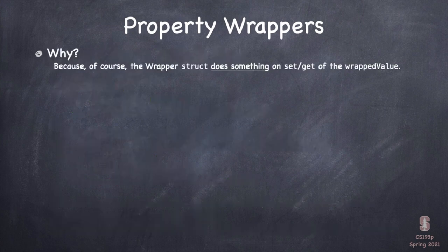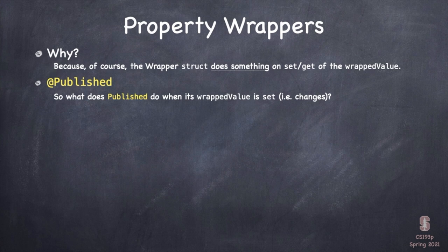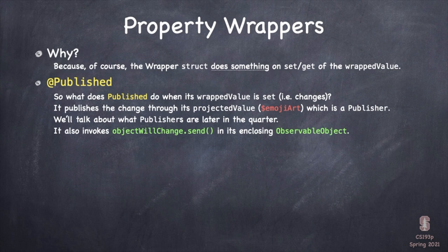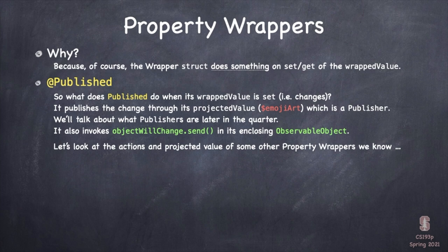To understand property wrappers, we need to understand what their wrapped value is, what their projected value is, and what they do. @Published — when its wrapped value changes, it publishes the change through its projected value as $EmojiArt, and it has code in there that calls objectWillChange.send in its enclosing observable object. Let's go through each of the at-sign things and find out their wrapped values, actions, and projected values.